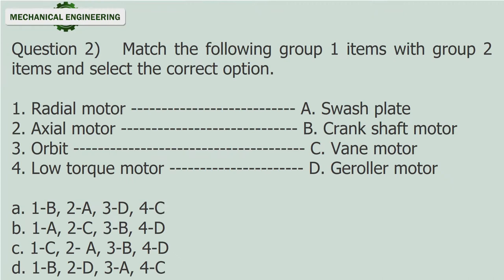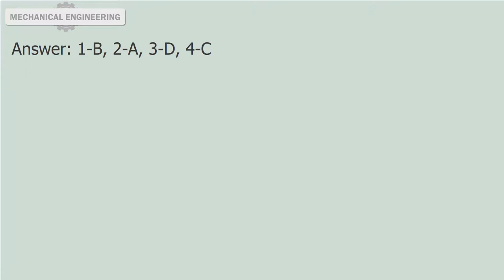Question 2: Match the following Group 1 items with Group 2 items and select the correct option. Group 1: 1) radial motor, 2) axial motor, 3) orbit, 4) low torque motor. Group 2: A) swash plate, B) crankshaft motor, C) vane motor, D) gerotor motor. Answer: 1-B, 2-A, 3-D, 4-C.